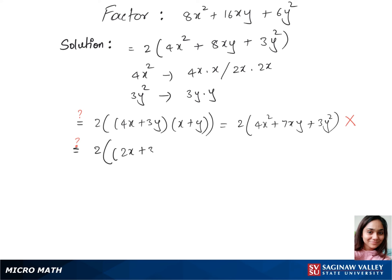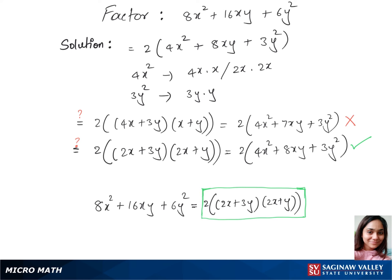2 times (2x plus 3y) times (2x plus y). We get from this 2 times (4x² plus 8xy plus 3y²), and this one matches up with our trinomial on top. So these are our factors: 2 times (2x plus 3y) times (2x plus y).